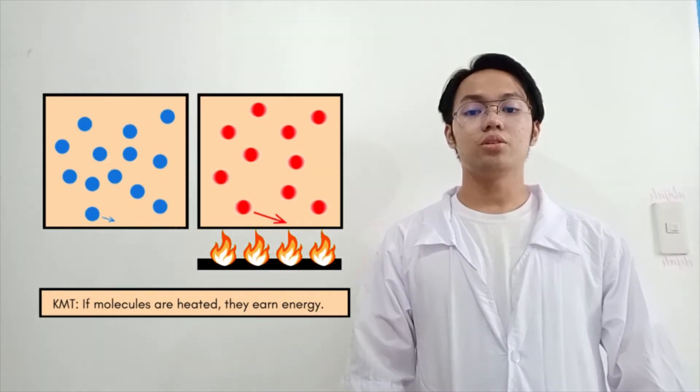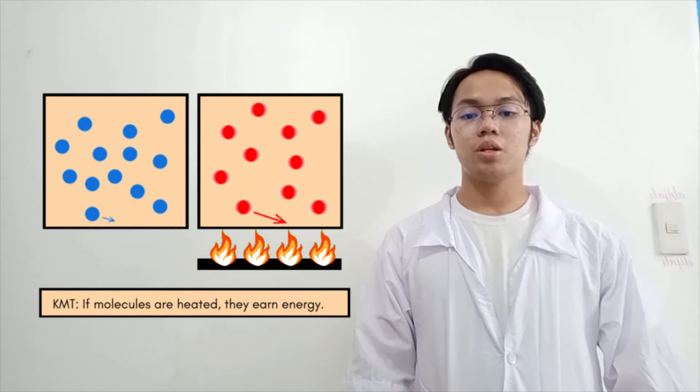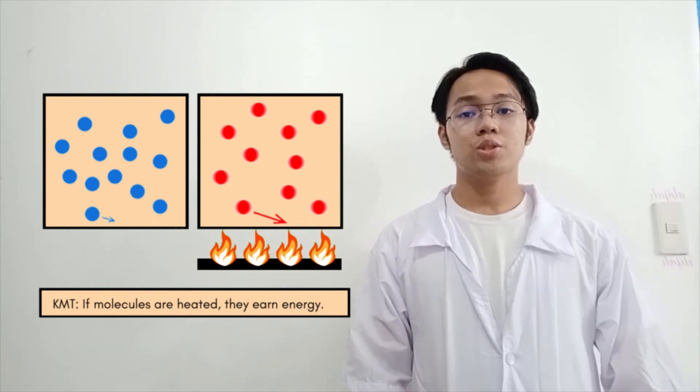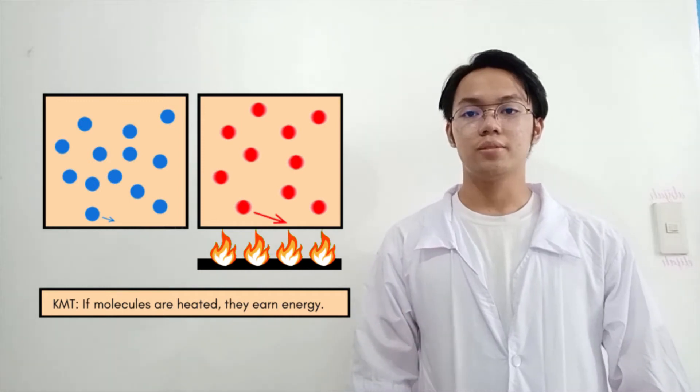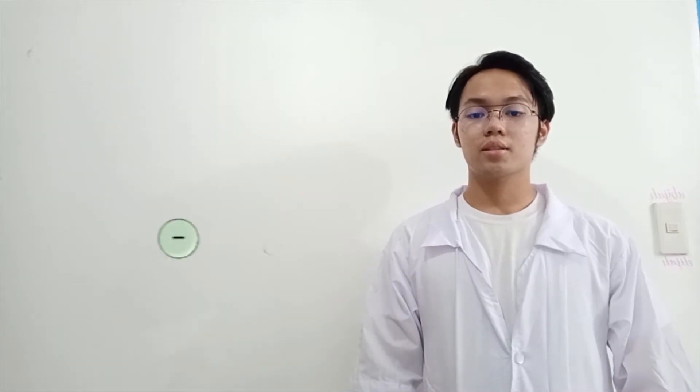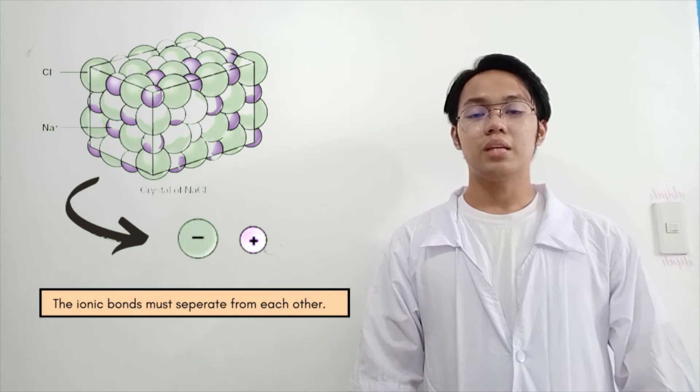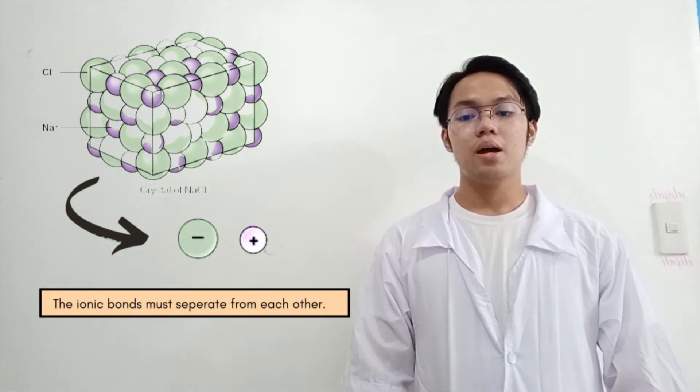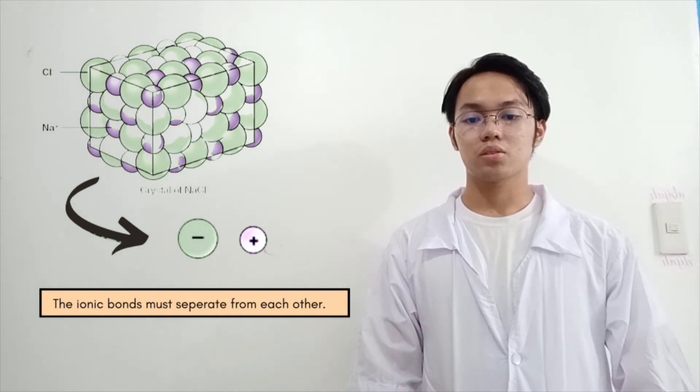Under the kinetic molecular theory, the kinetic energy of molecules relates to the energy with the molecules. So if molecules are heated, they earn energy. First, in heating the solution, the ions must separate from each other. NaCl must become Na-positive and Cl-negative ions. The energy required to do this is called lattice energy.